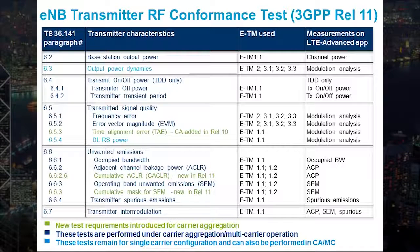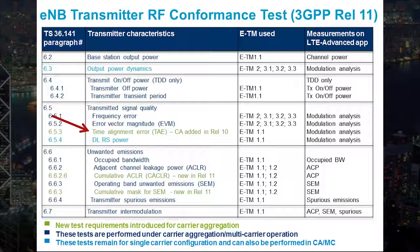Other tests, highlighted in dark blue, are existing LTE tests, but the test parameters have been modified to support carrier aggregation. The time alignment error test was initially defined for MIMO and transmit diversity in LTE Release 8 and 9. However, new requirements have been added to LTE Advanced for carrier aggregation.